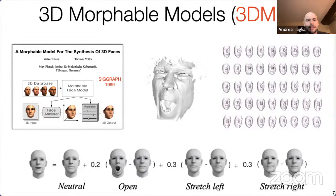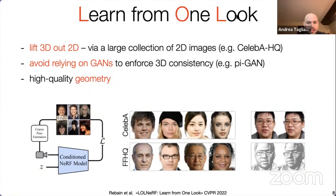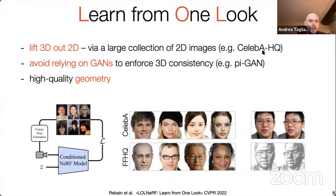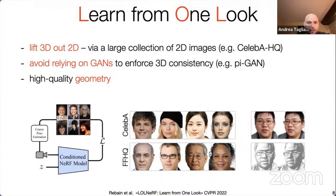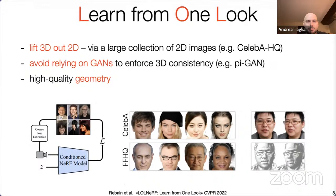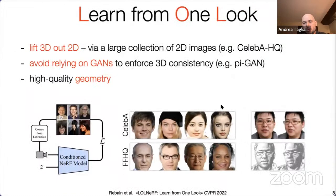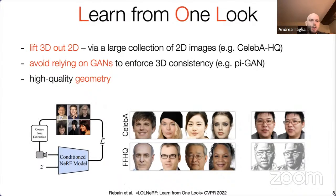Can we learn statistical models of faces without relying on 3D depth sensors and classical mesh registration? That's exactly the purpose of LOLNeRF — 'Learn from One Look' — presented at CVPR this year. The idea is to lift 3D out of 2D using a large collection of 2D images, in this case CelebA-HQ. We want to avoid relying on GANs, and instead achieve extremely high quality geometry like what you can see here from our model's output.